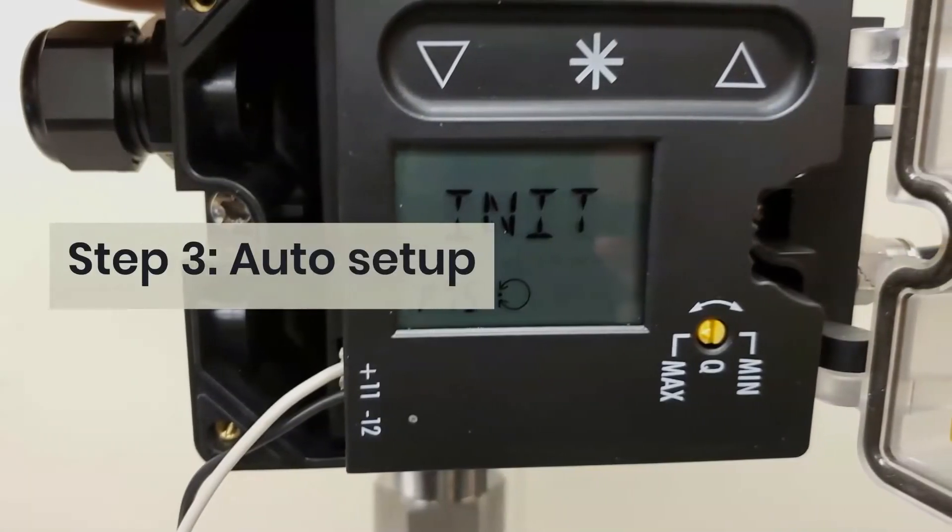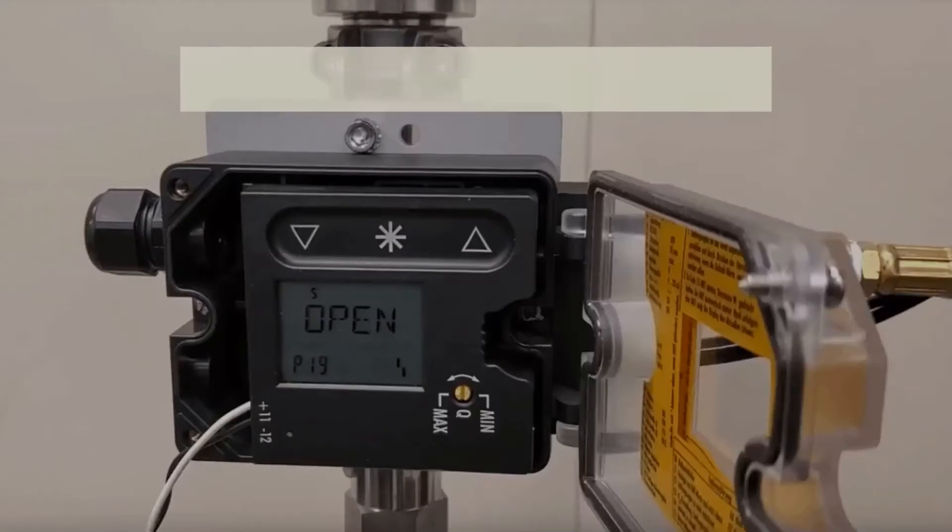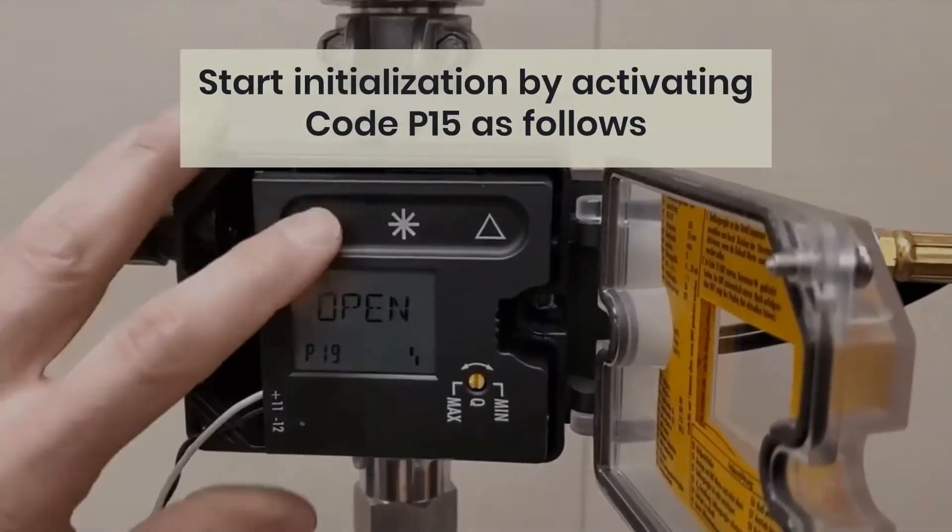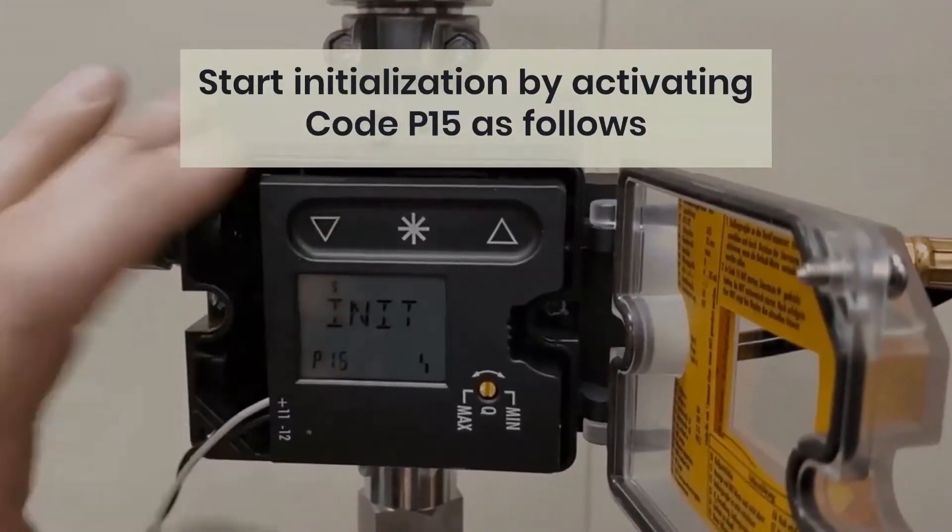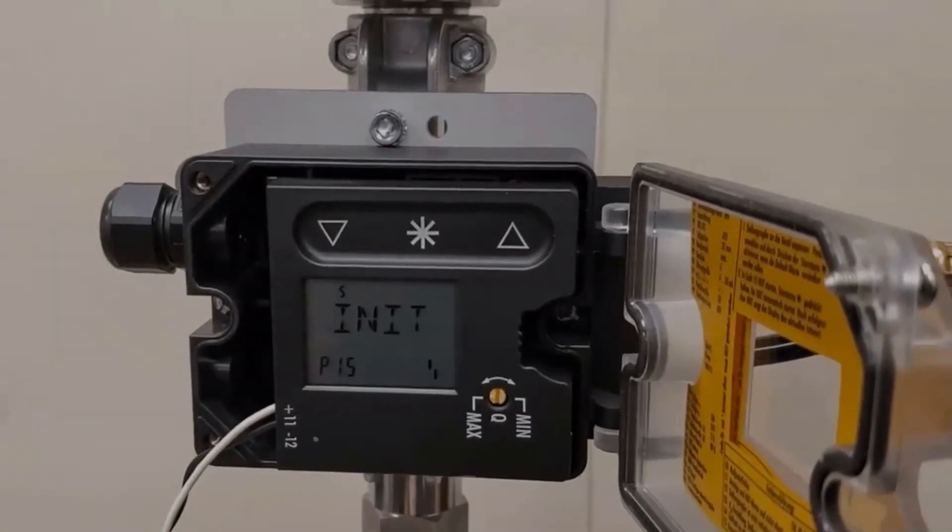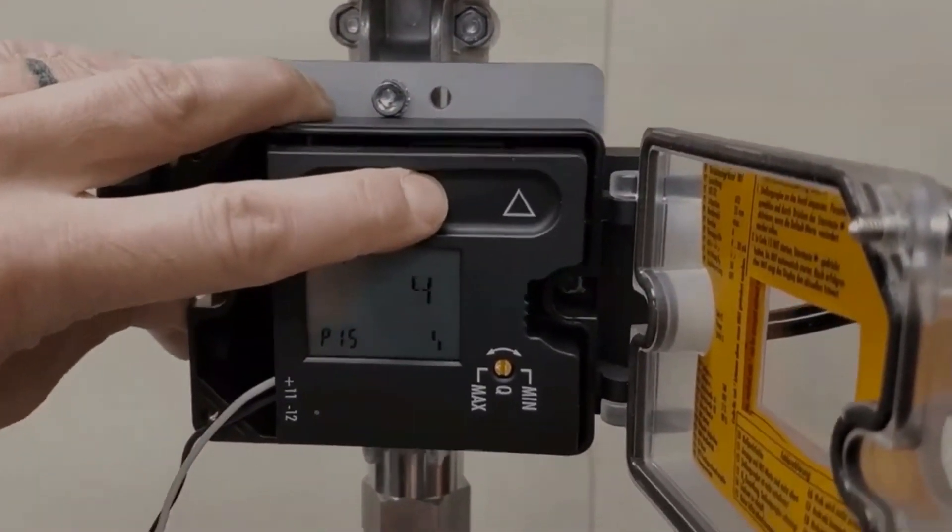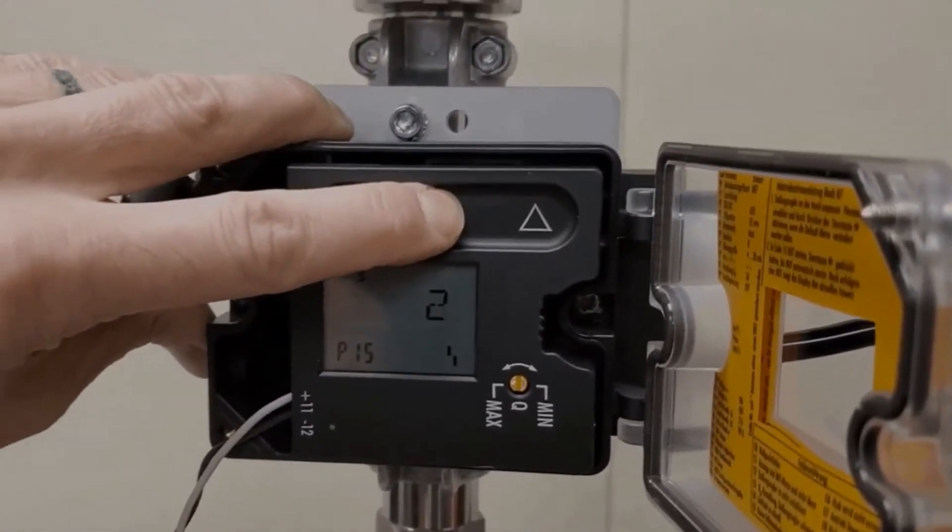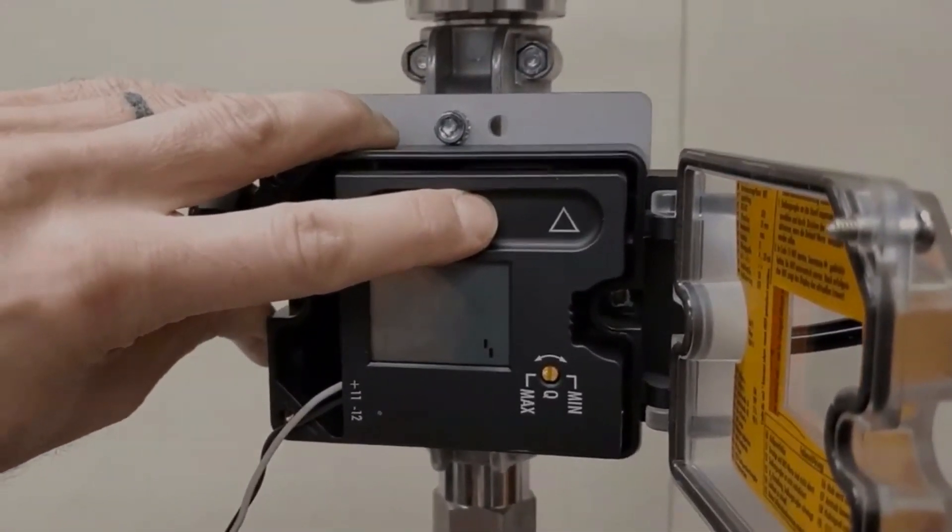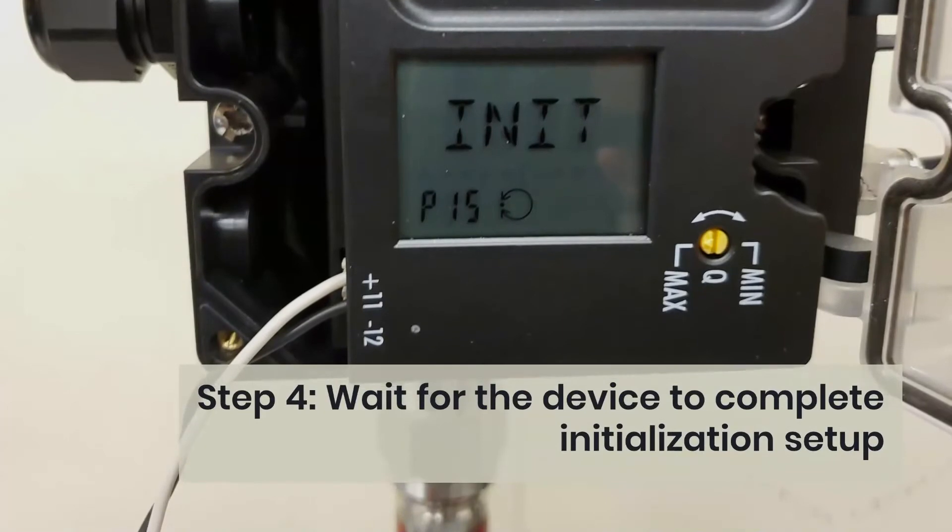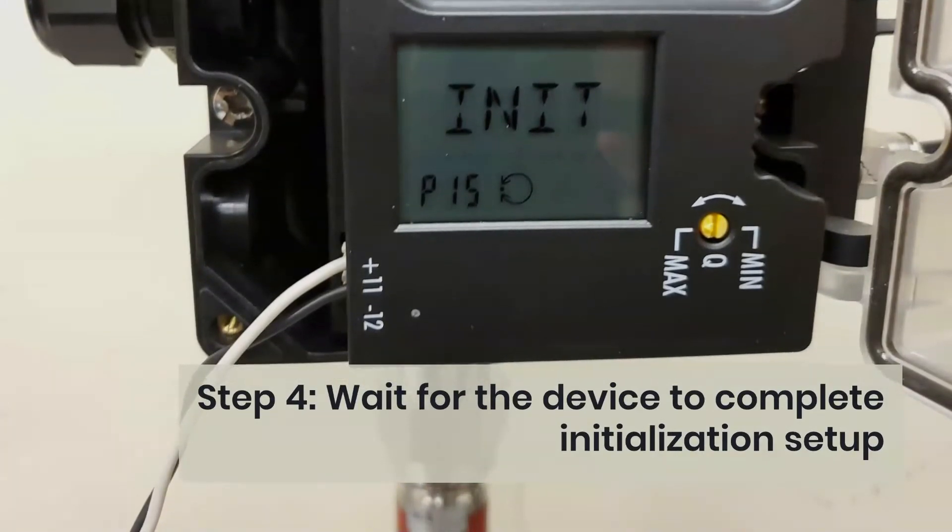Step 3: Auto Setup. Start initialization by activating code P15 as follows. Press the down or up arrow to select code P15. Press and hold the star symbol for 6 seconds. 654321 will count down on the display. Step 4: Wait for the device to complete initialization setup.